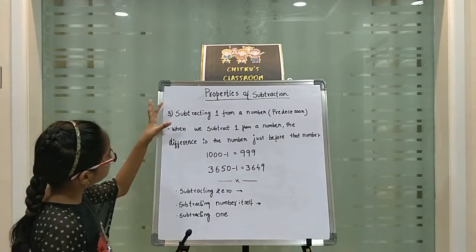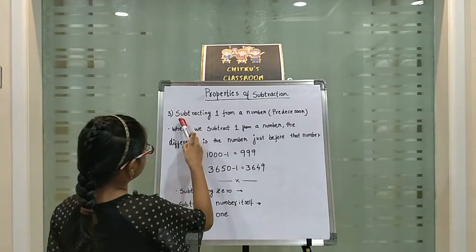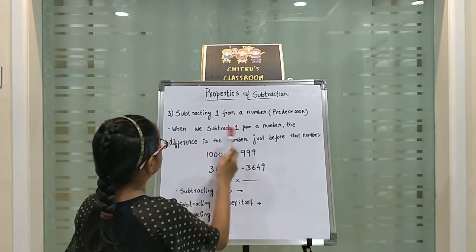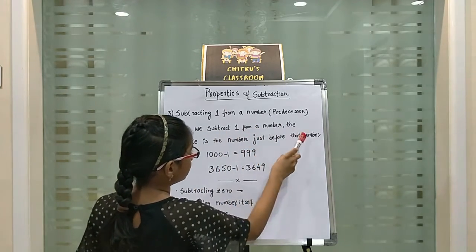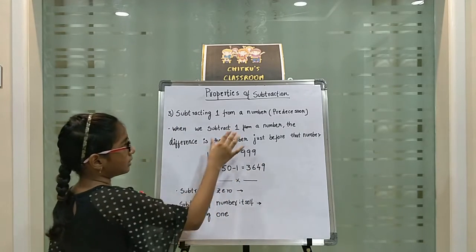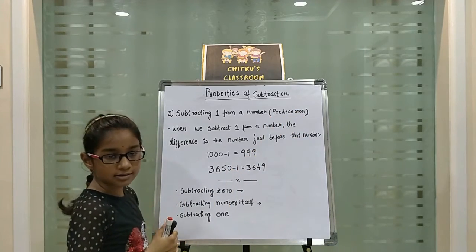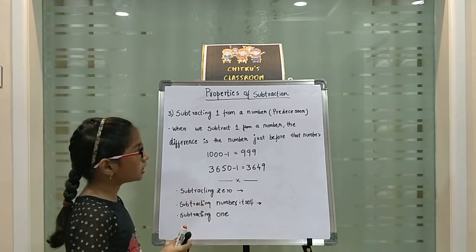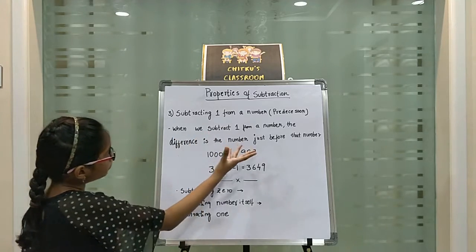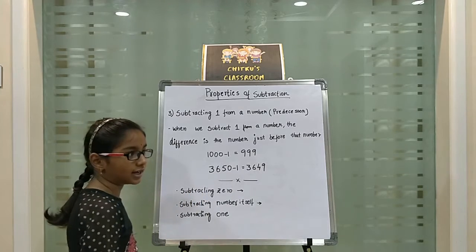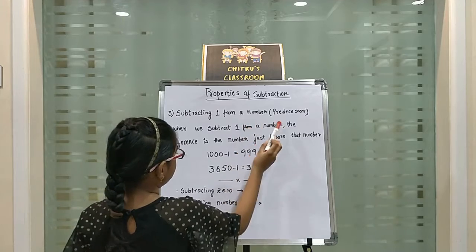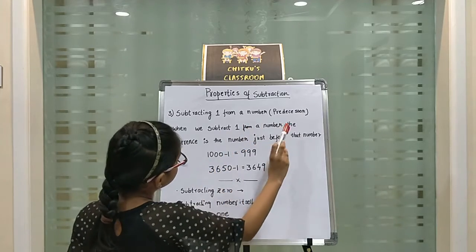Now let's do this property: subtracting 1 from a number gives the predecessor. When we subtract 1 from a number, the difference is the number just before that number. We already learned about successor — successor means the number after, and predecessor means the number before that number. Subtracting 1 means taking away 1, and the result is the predecessor.